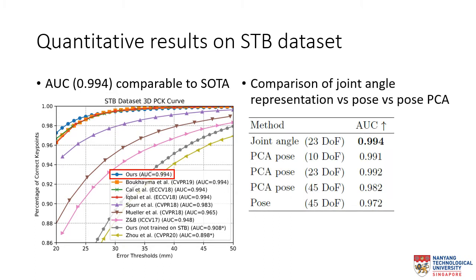We also use the same dataset to conduct a self-comparison on the use of joint angle representation versus pose PCA. As shown in the table, our proposed joint angle representation obtained the highest AUC score, whereas over-parameterizing the hand pose with 45 degrees of freedom has a negative impact on the AUC score.